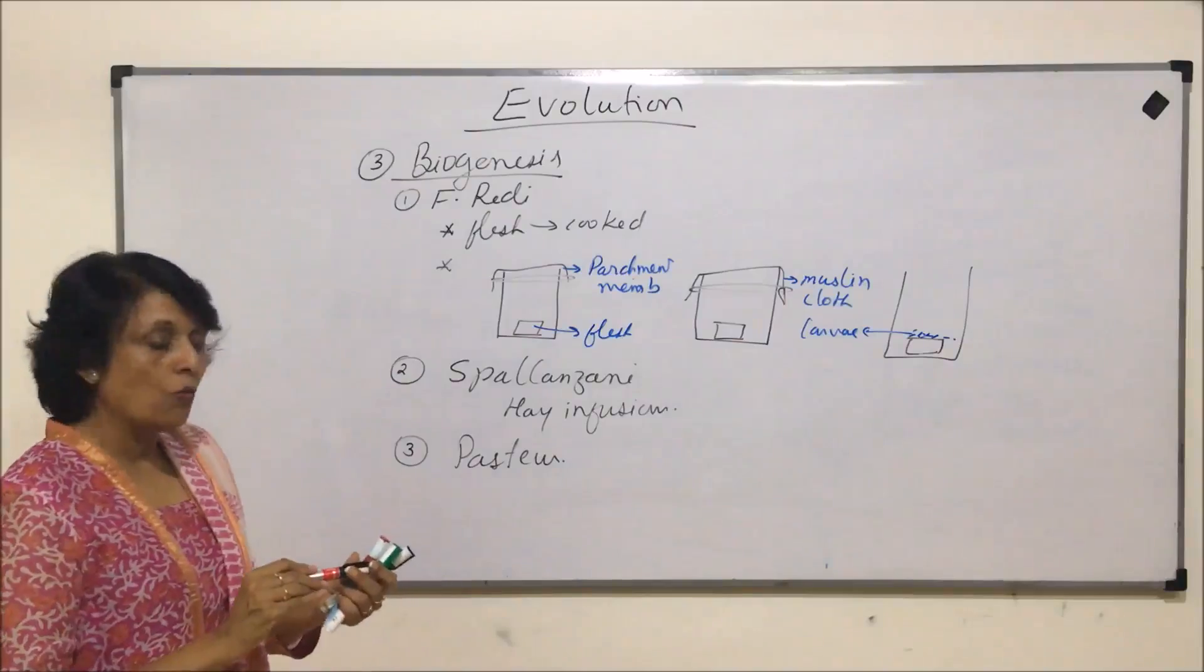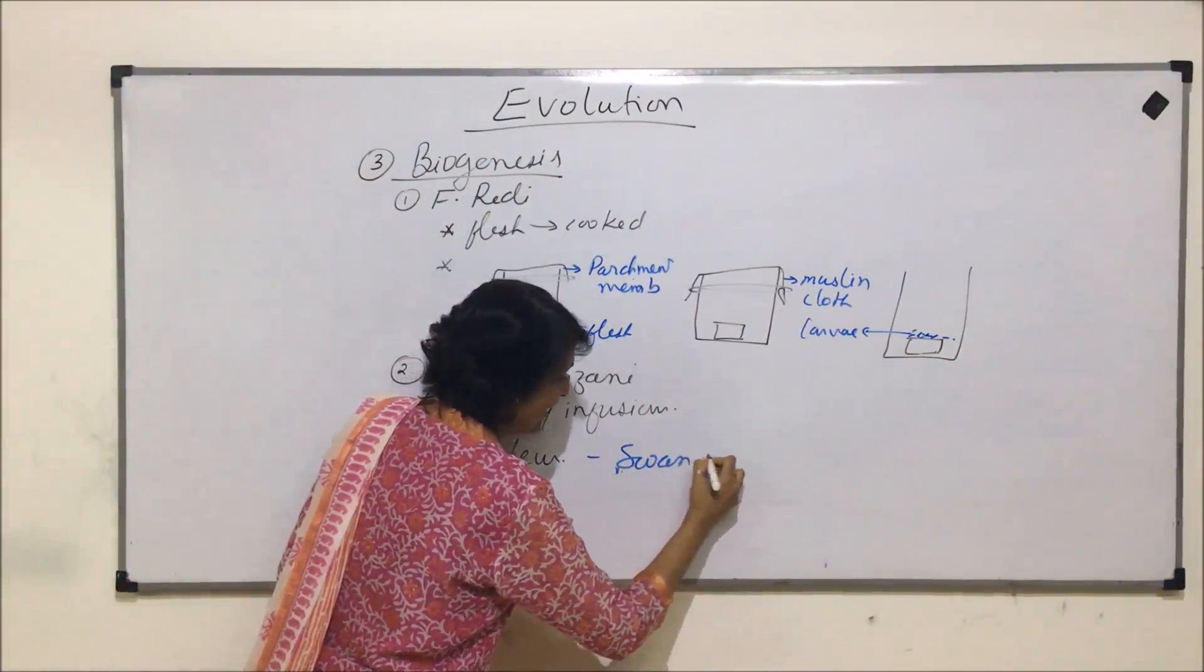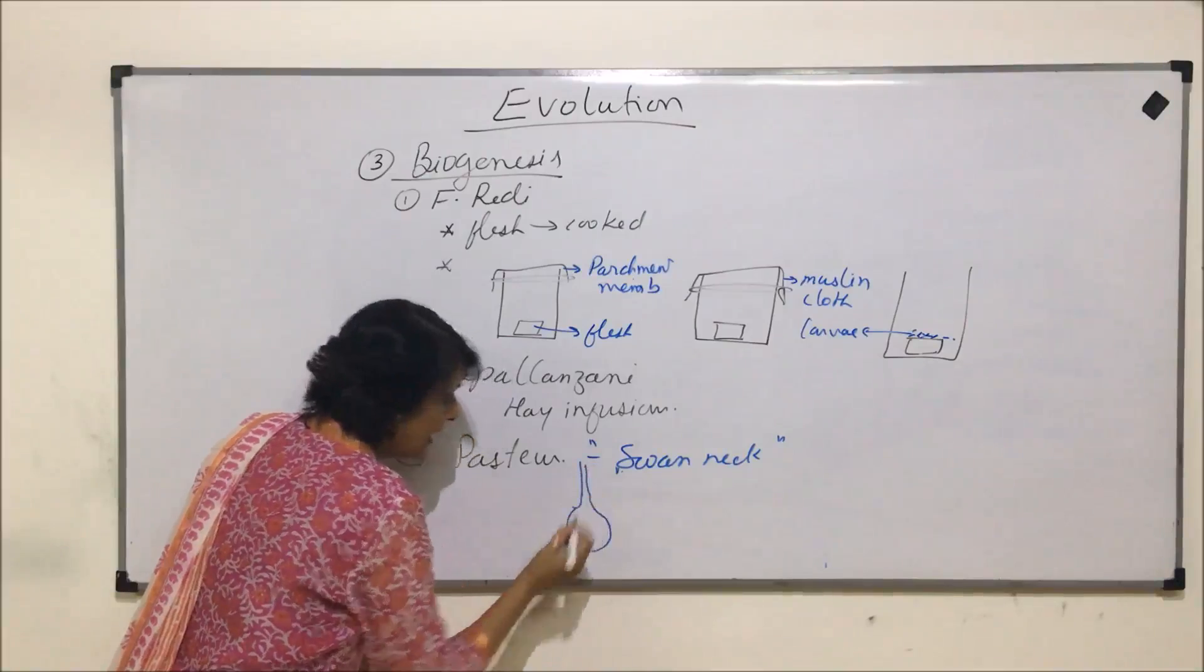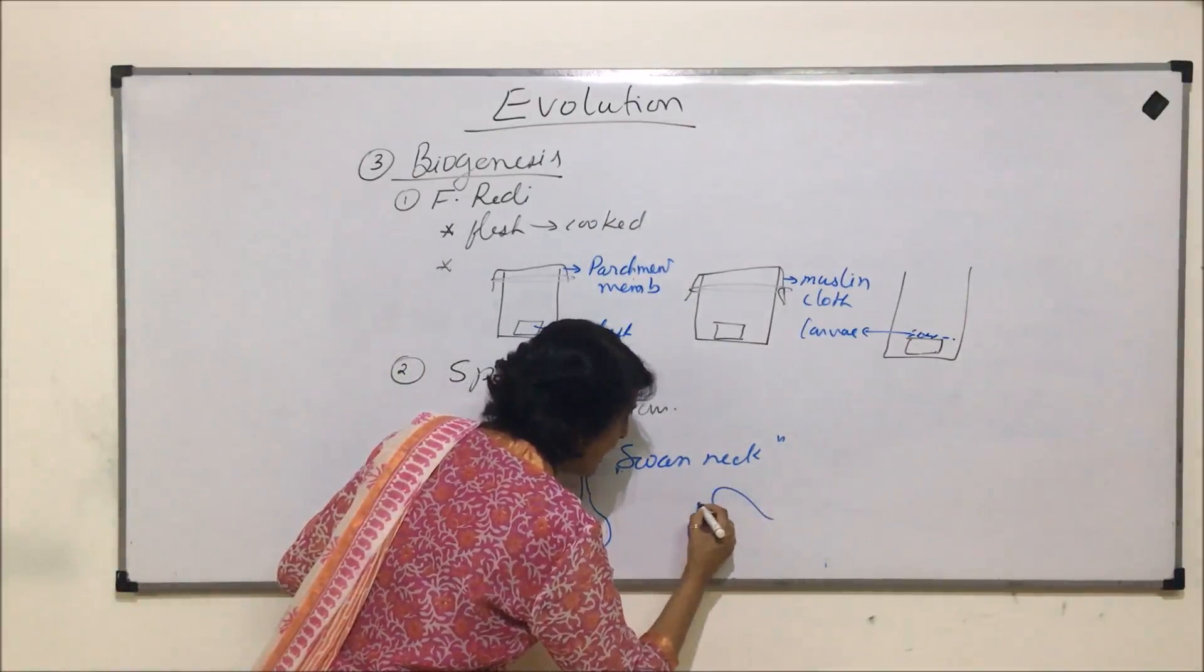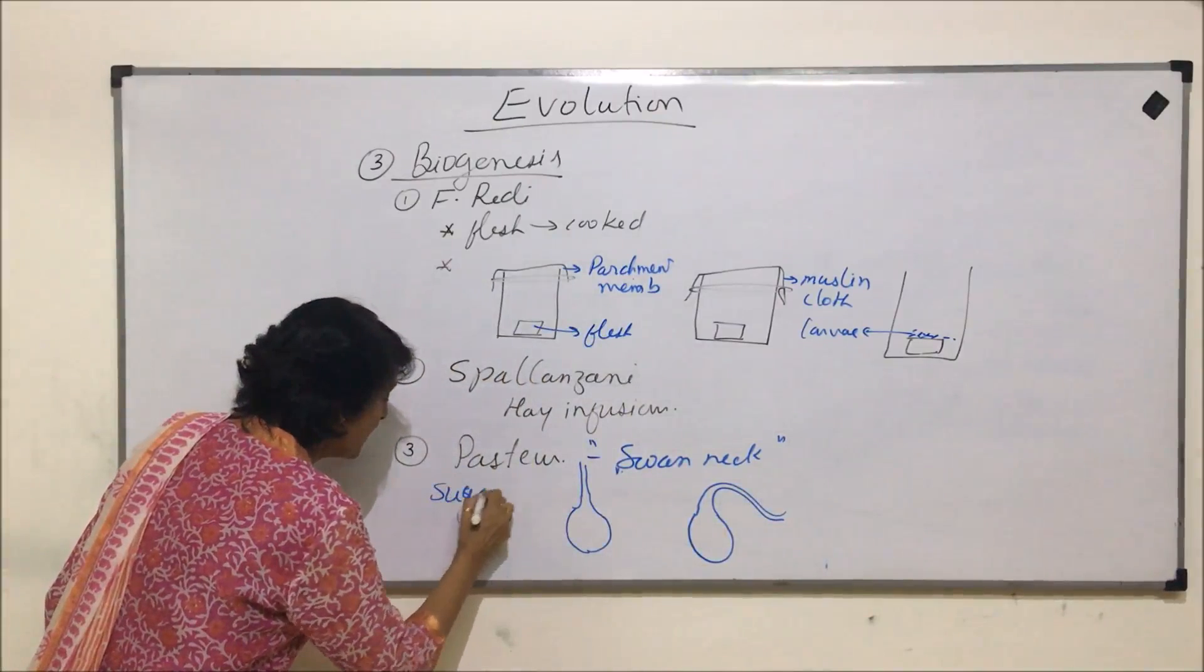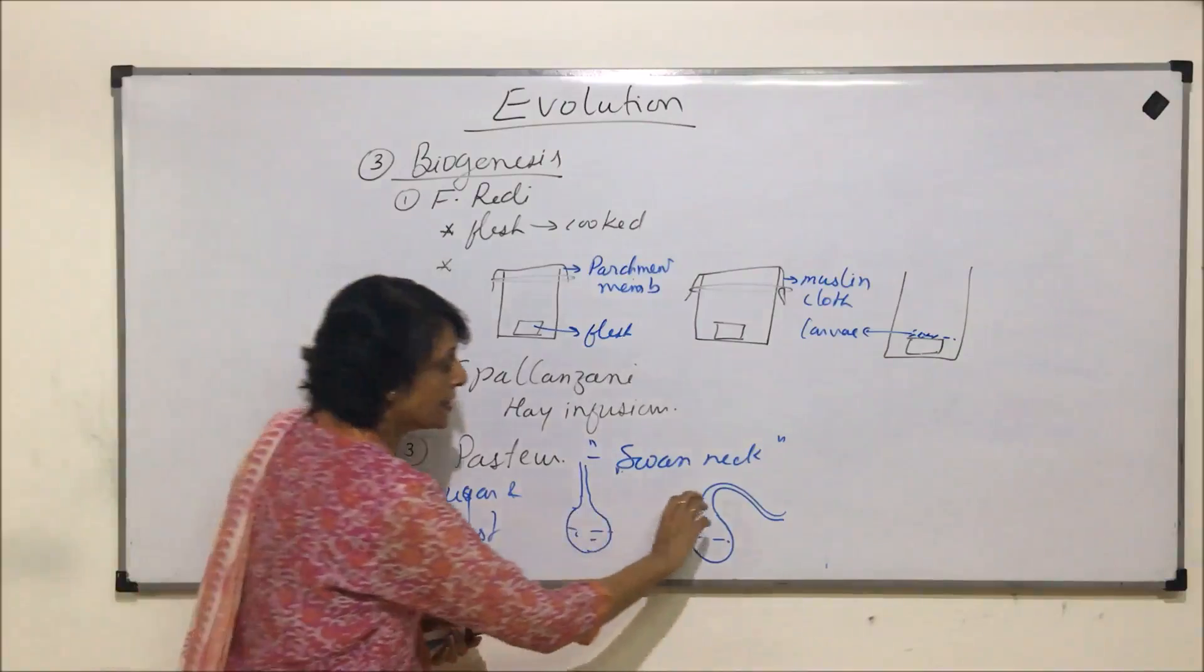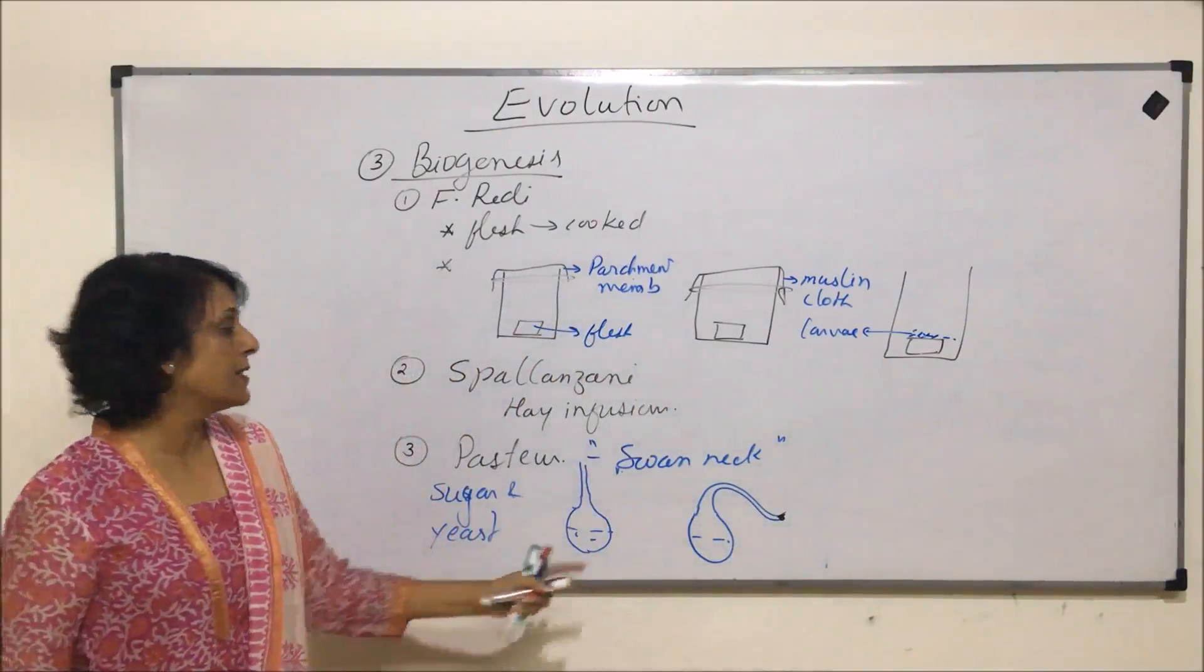And the third experiment was by Pasteur. So Pasteur's experiment is known as swan neck experiment. The reason was the vessel or the container he chose was a round bottom flask with a long neck, and he bent this neck in the shape of the swan's neck, and that is why this name was given to this experiment. So after taking sugar and yeast mixture in this container, he heated this long neck of the round bottom flask. Because of heating, this neck got bent and he sealed it. The opening was sealed.